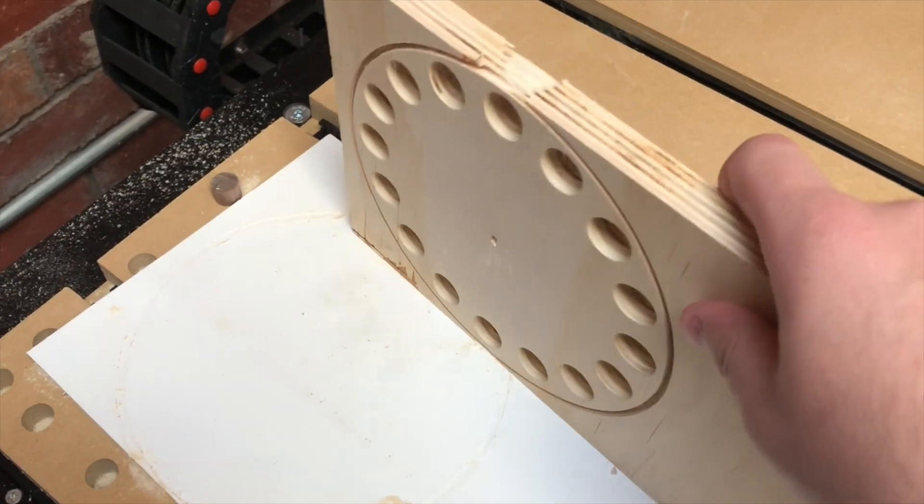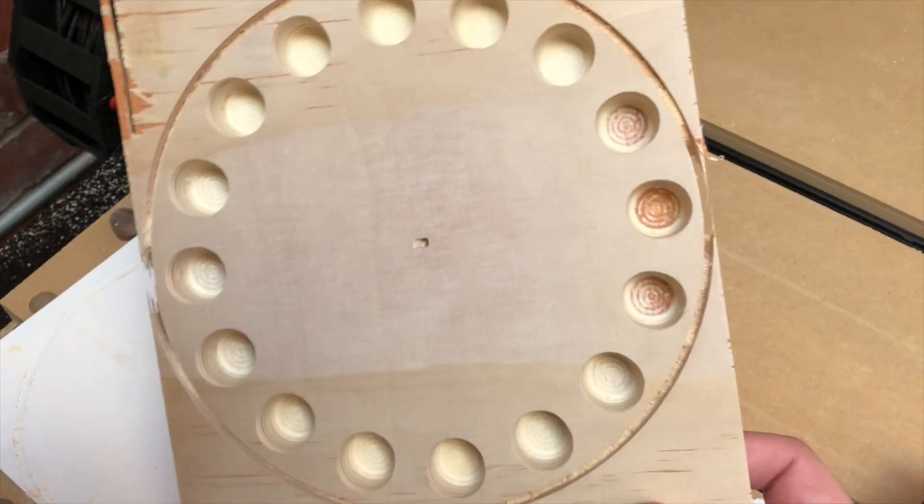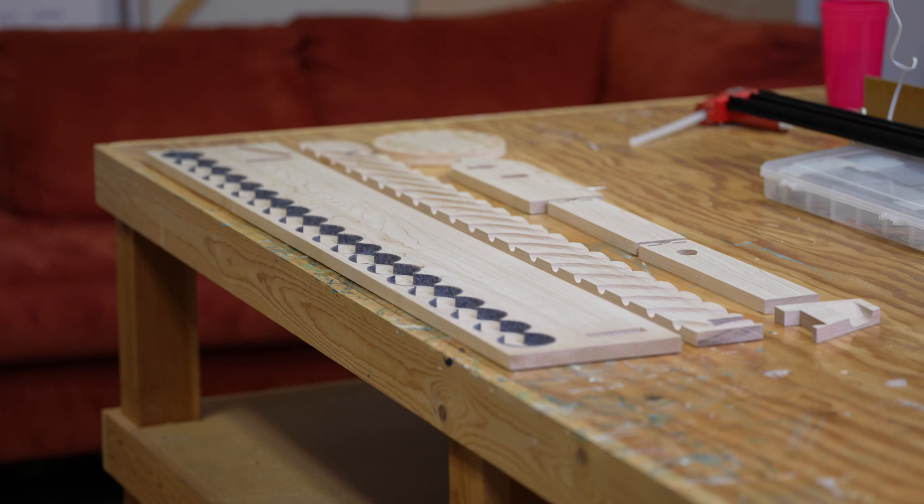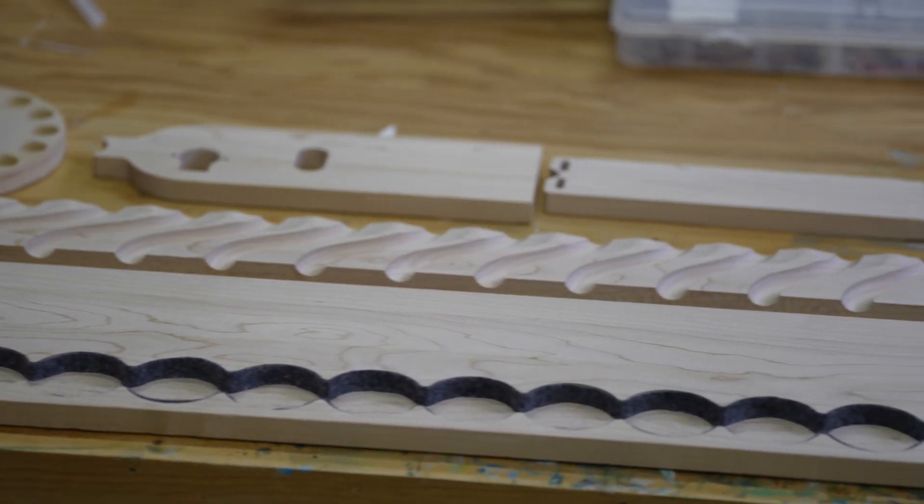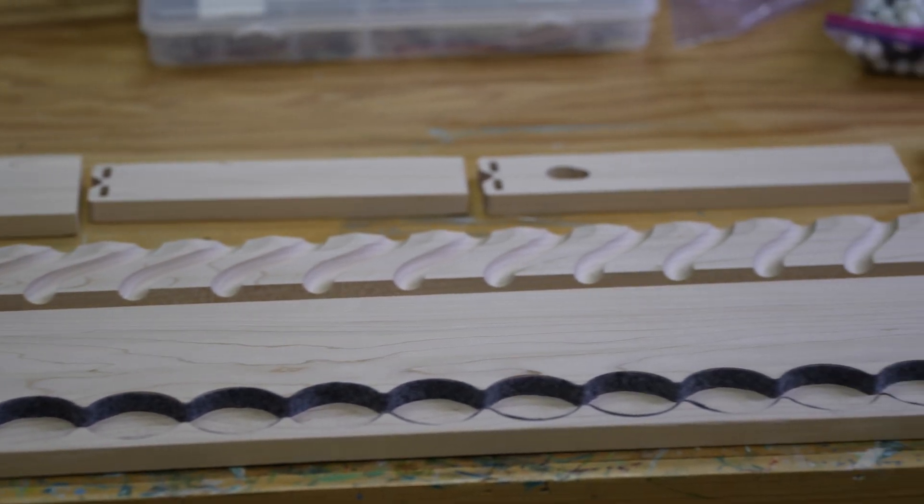The holes aren't actually perpendicular to the face of the wheel. They turn inward slightly so the marble can fall out which you'll see more of that later. These are all the machined parts just lined up so you can see all of the CNC'd parts.